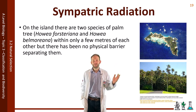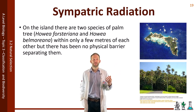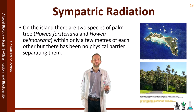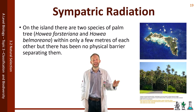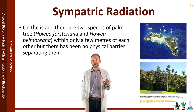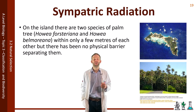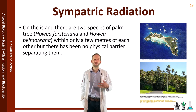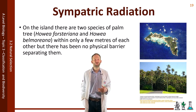Phylogenetics was used to show that both palm trees came from a shared ancestor which separated upon the formation of the island. The palms have different flowering times as their reproductive barrier. The soil type preferred by each palm is slightly different, and the hypothesis is that each palm evolved to flower at a different time due to this. It is therefore an example of sympatric speciation, or sympatric radiation.